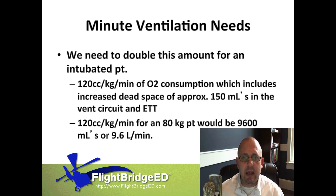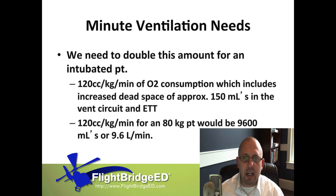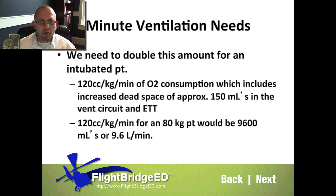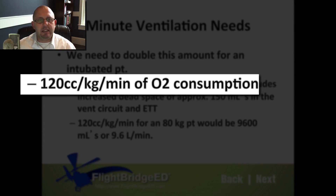We deliver about a thousand mils a minute but only use a very small fraction of that, so we have a huge amount of reserves. However, when we get into a situation secondary to illness, injury, or a sympathetic response, we start utilizing those stores very quickly. Based on that, we use a formula that's double our normal consumption need — and that's 120 cc's per kilogram per minute.